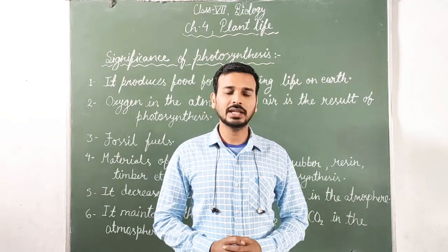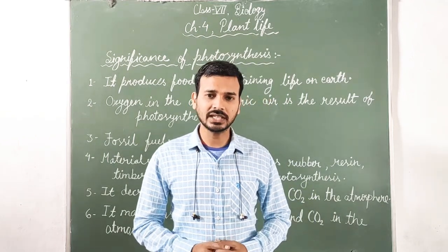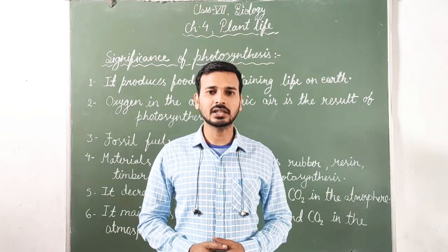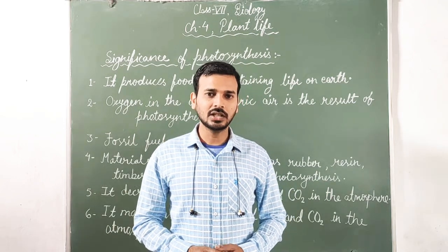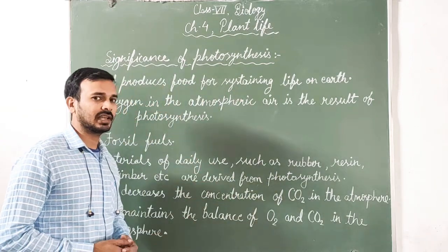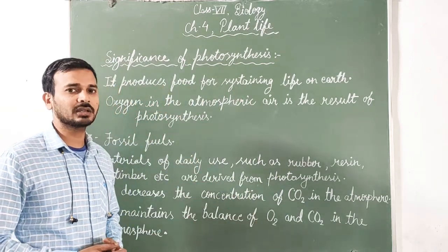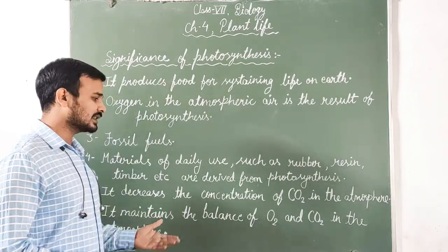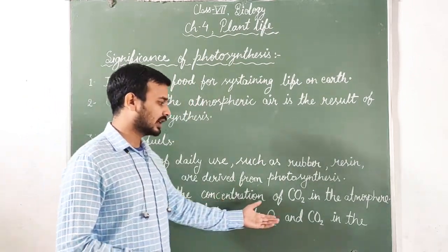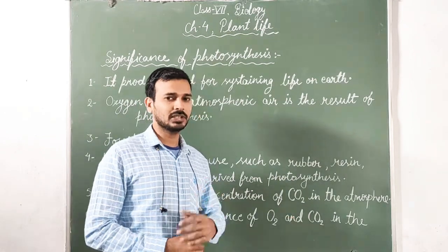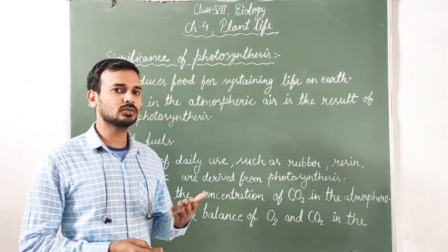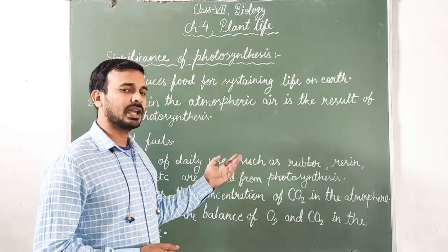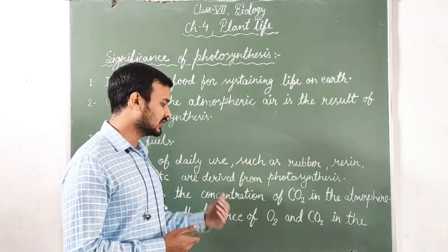Point six: photosynthesis maintains the balance of gases in the atmosphere. The imbalance of different gases in the atmosphere creates pollution, which is harmful. These green plants help decrease pollution through photosynthesis — they take carbon dioxide from the atmosphere and produce food and oxygen, which are released through stomata back into the atmosphere.